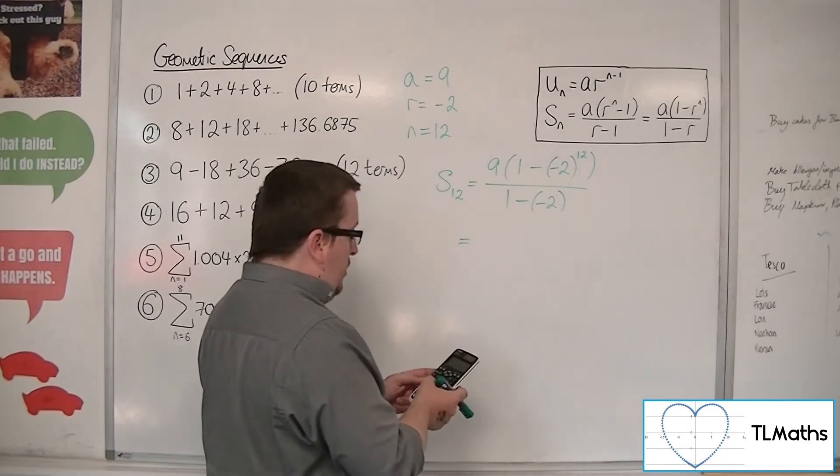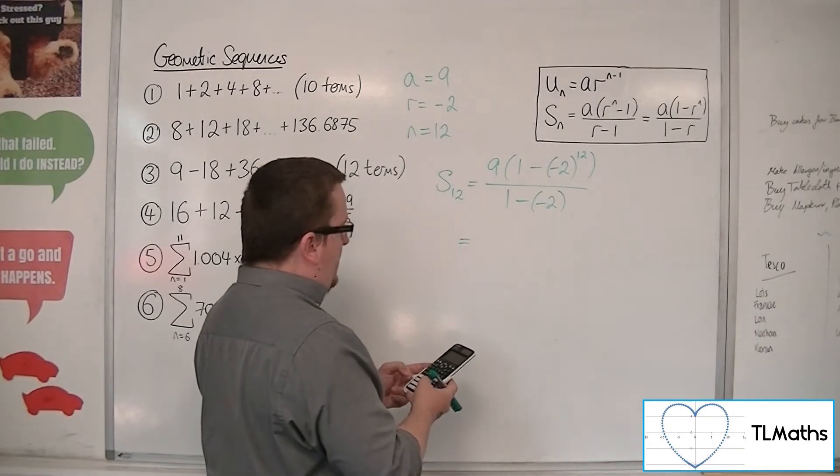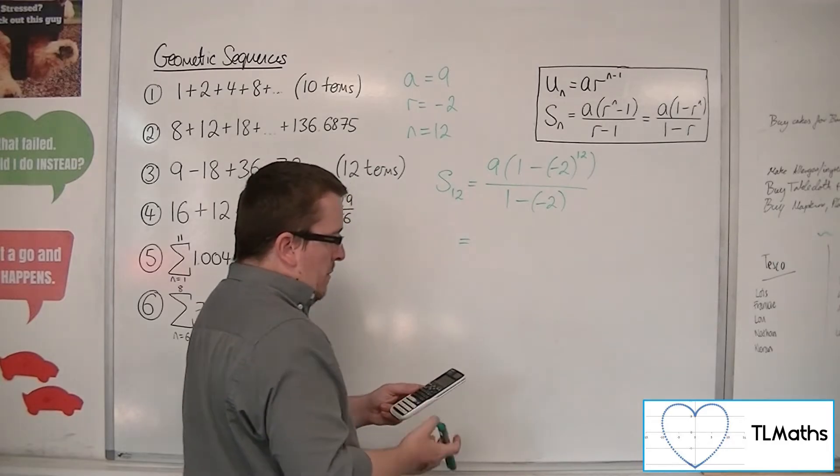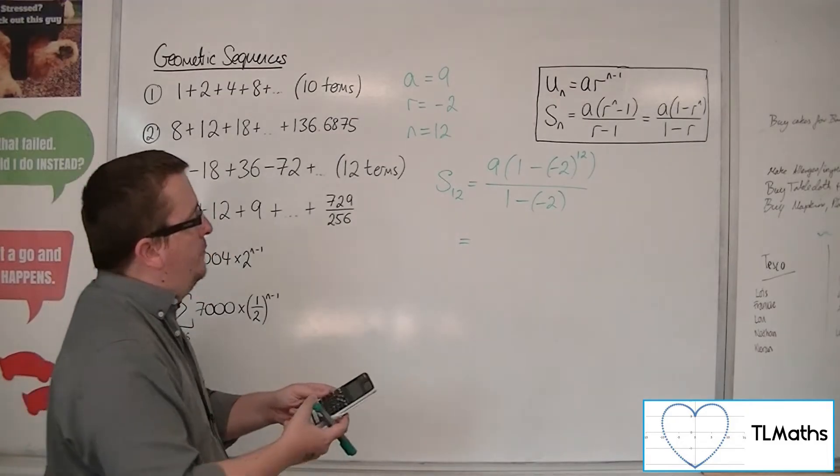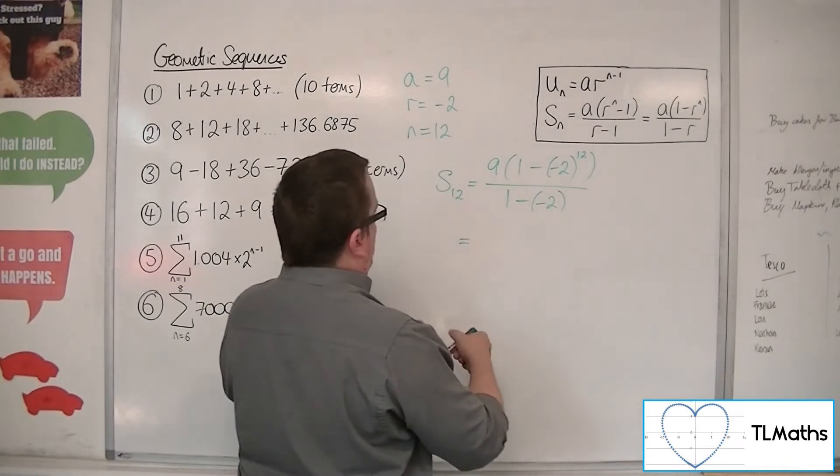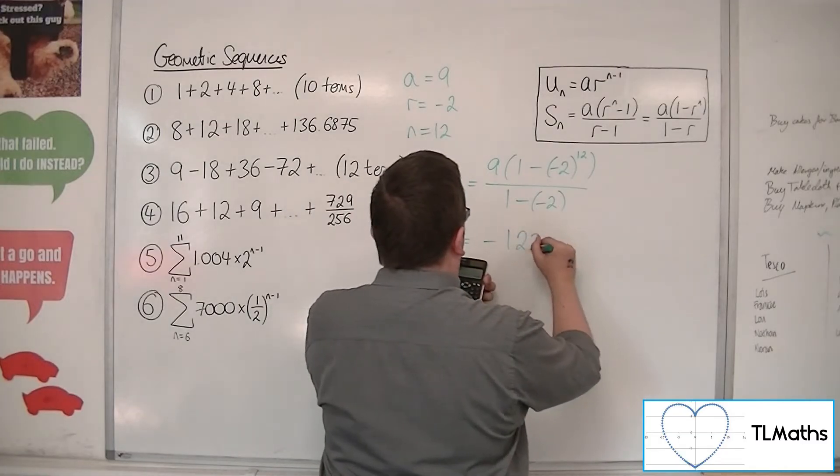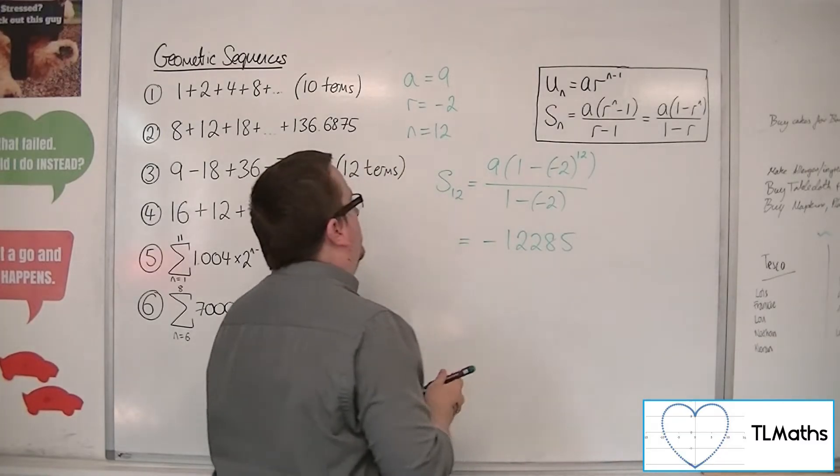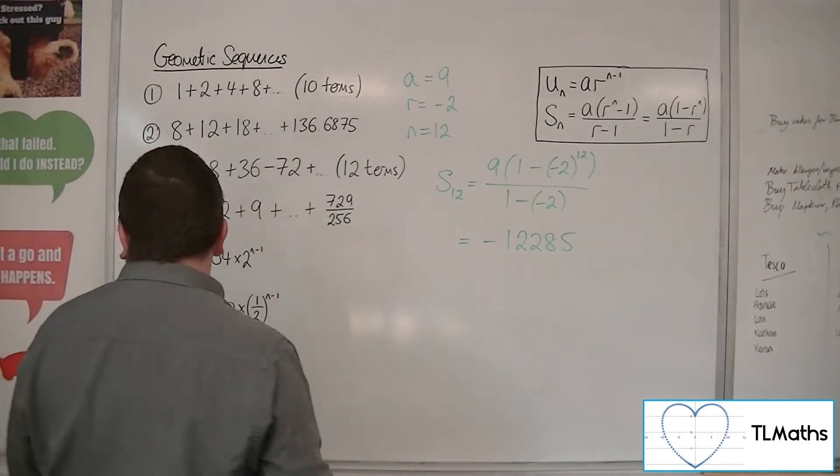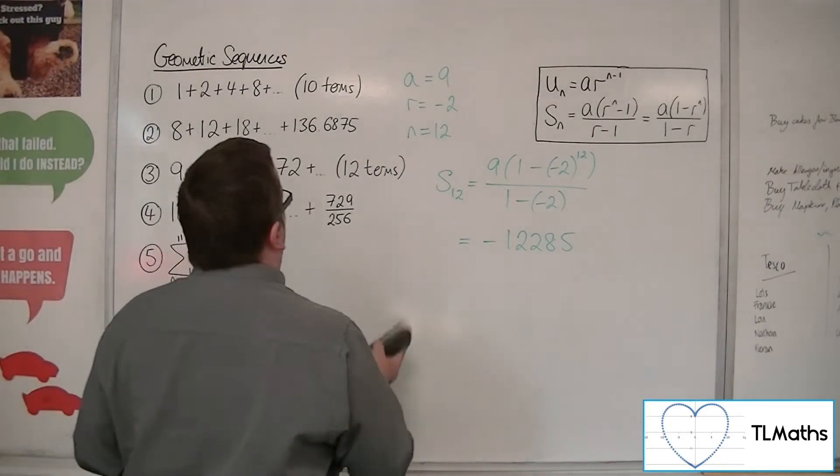So, in the numerator, we have 9 lots of 1 take away minus 2 to the power of 12, which is minus 36855. And we're going to divide that by 3, which is minus 12285. So that is the sum of the first 12 terms. So that's number 3.